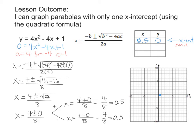So this is our x-intercept and our vertex. We need to get two other points so that we can plot them on the coordinate plane and find the shape of our parabola. What I recommend is that you just choose one x-value to the right of your vertex and one x-value to the left of your vertex.